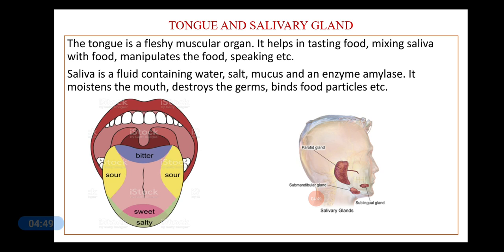The tongue is a fleshy muscular organ. It helps in tasting the food, mixing saliva with the food, manipulating the food throughout the mouth, and also in speaking. There are taste buds present on the tongue in different positions. These taste buds help in tasting food — for example, a spoonful of sugar tastes sweet, or a pinch of salt tastes salty.